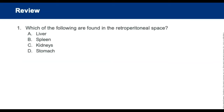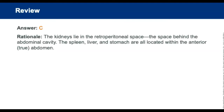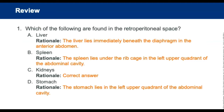Review questions: Which of the following is found in the retroperitoneal space? The answer is the kidneys — everything else is in the abdominal cavity. What is the cartilaginous tip of the sternum called? The xiphoid process — the lower part of the sternum, used as an indicator for CPR.